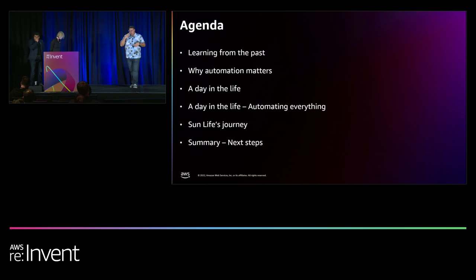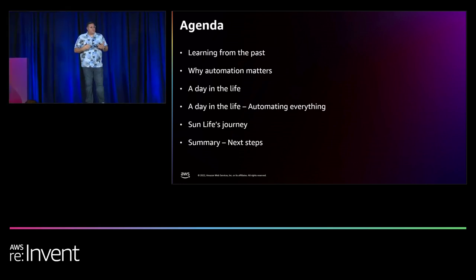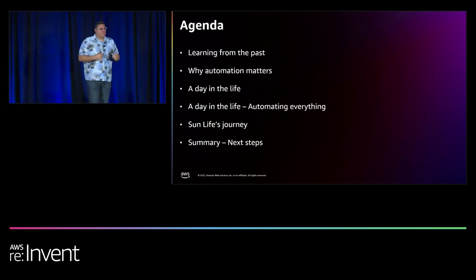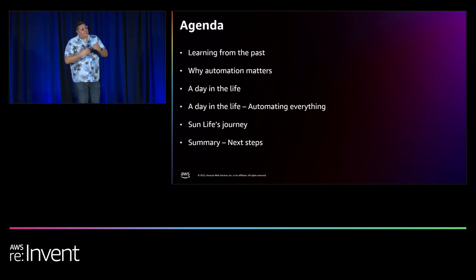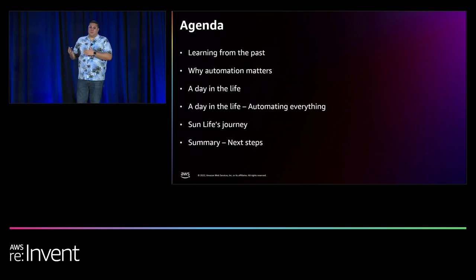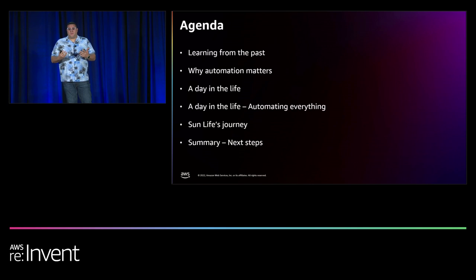Just a quick agenda overview: we're going to look at an example from the past and see what we can learn from it, and why automation matters. Then we'll look at a day in the life of a cloud admin, and revisit that day once they've implemented AWS services to automate tasks. Then we'll hear from Sun Life about their automation journey, and finally a summary of next steps.